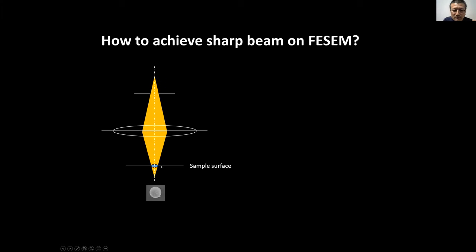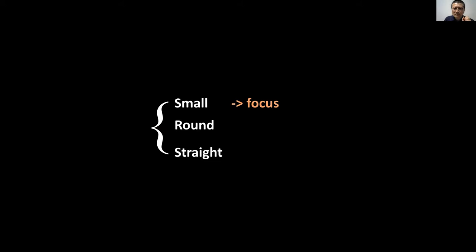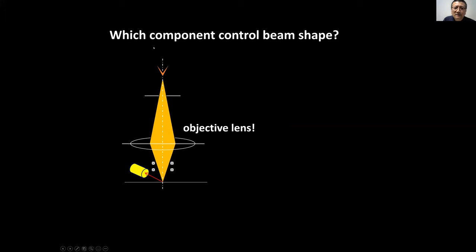When you change the working distance, you see the image become bigger and smaller, clearer and not clear. As a user, you always need to focus the beam first. When you make a good focus, you make the beam smaller. So what about the shape of the beam? Which component controls beam shape? Let's look at the lens — we use electromagnetic fields in the pole piece to focus the electron beam.